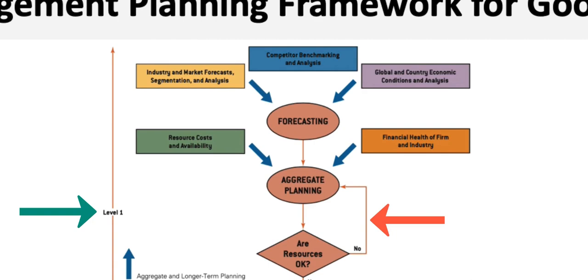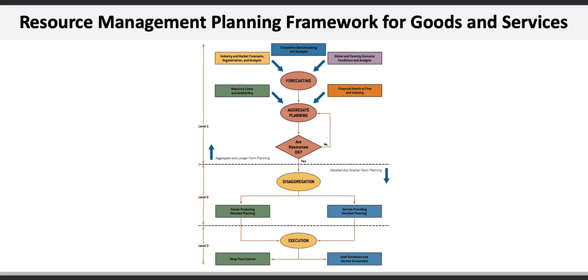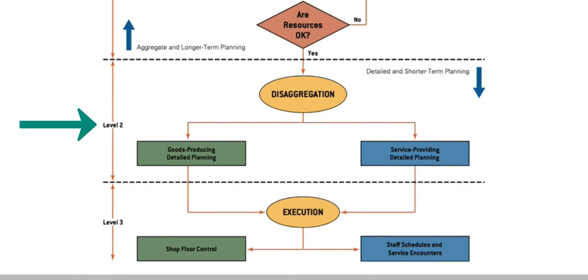Once we're good to go with the resources, we enter the disaggregation stage, which is all about the detailed planning for either the production of goods or the provision of services. After that, we proceed to Level 3, which is to execute on the plan.